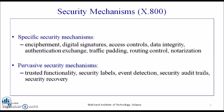The next category is pervasive security mechanisms, which are not specific to any particular OSI security service or protocol layer. The first is trusted functionality — that which is perceived to be correct with respect to some criteria, as established by security policy. For example, OTP assures that you are the trusted, authentic receiver actually performing the transaction. Security labels refer to a marking bound to a resource, such as a data unit, that names or designates the security attributes of that resource.